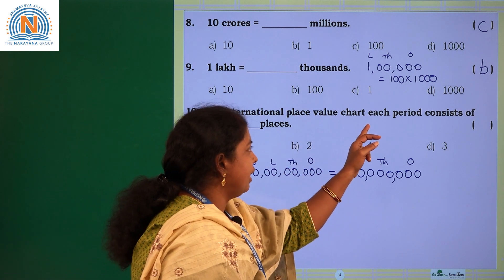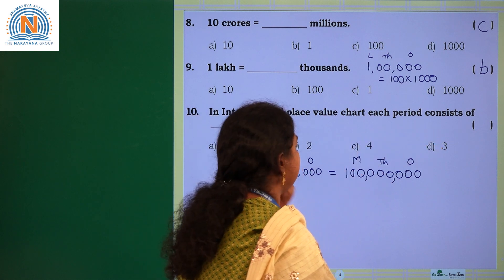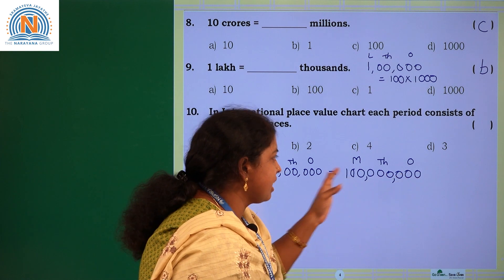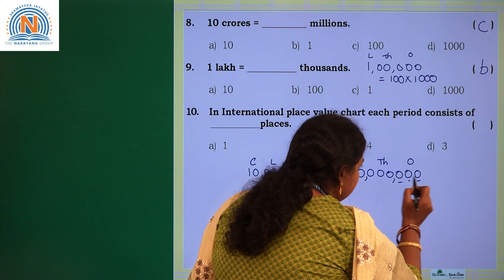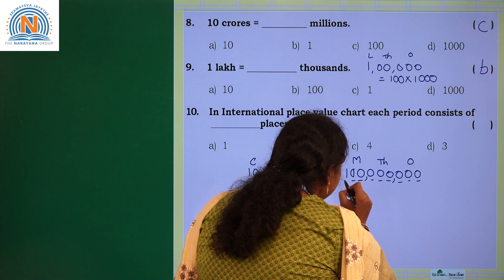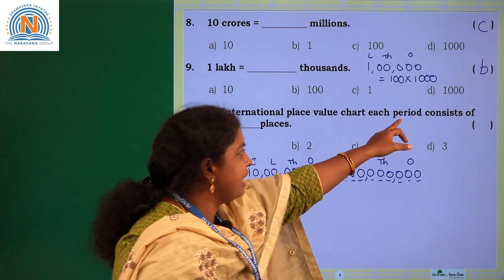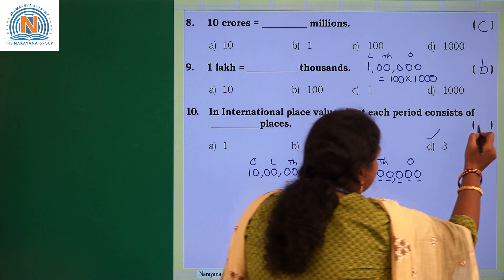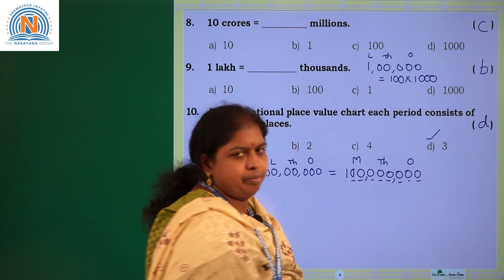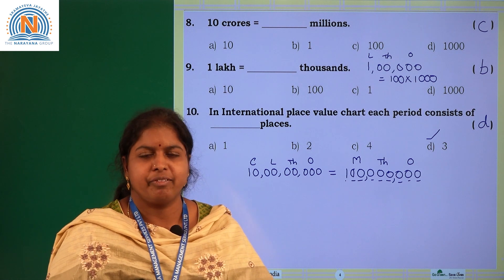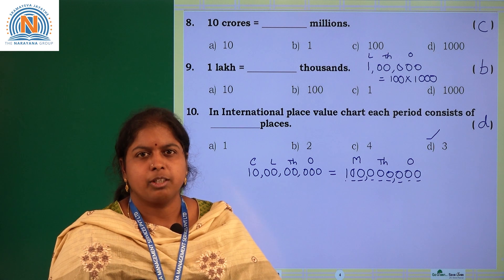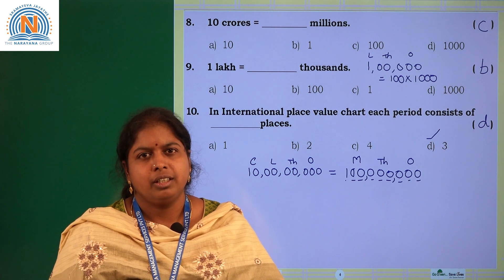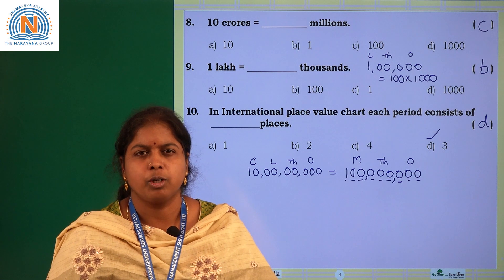In the international place value chart, each period consists of dash places. Observing the chart: the first period has 3 places, the second has 3, and the third has 3. So each period consists of 3 places. Choose option D. Practice at home — open your textbook and solve all problems from examples to exercises. Thank you, children.